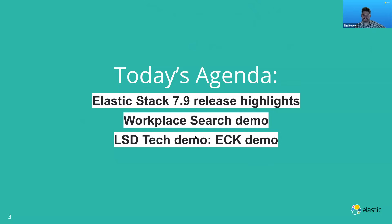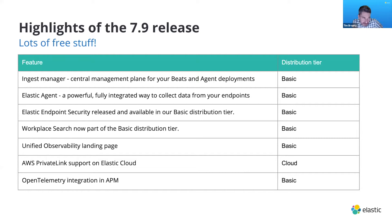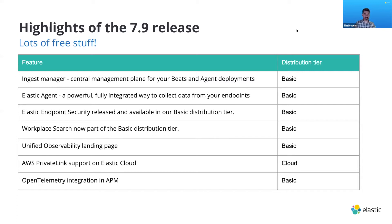The highlights of 7.9 are really that there's lots of free stuff. These are the highlights — not the only things that went into 7.9, but the things that made the most impact — and they're all available in the basic tier. We really focused on basic this time. We've introduced something called the Ingest Manager. Probably since I joined about 12 months ago, I've heard about Ingest Manager, Elastic Agents, and Fleet.